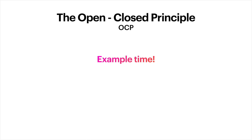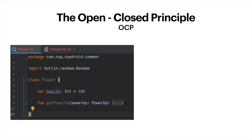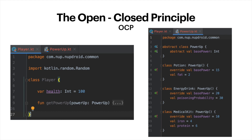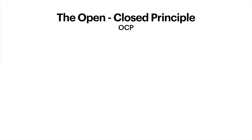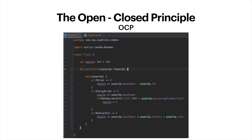Let's get right into an example. Today's scenario finds us playing a game. We have a Player class that contains a health variable starting at 100, and the player can also get power-ups while playing. We have a PowerUp base type containing only the base power. Then we have Potion, which extends PowerUp with a base power of 15 and has some fat that reacts negatively to the player's health. Next is Energy Drink with a base power of 20, but with a 30% poison probability. Finally, Medical Kit has a base power of 10 but contains iron and protein.